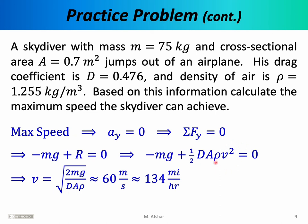Plugging in the mass of the skydiver, his drag coefficient, and his cross-sectional area, the speed comes out to be about 60 meters per second, or 134 miles per hour. The skydiver will not be able to go faster than 134 miles per hour no matter how high he is or how many seconds he's been falling. If he wants to increase his maximum speed, he can reduce his cross-sectional area by tucking in his limbs, or reduce his drag coefficient by reorienting from a belly flop to a head-first dive.